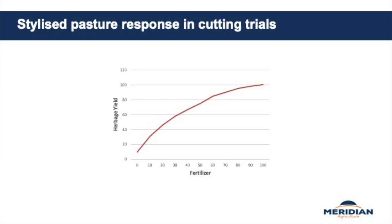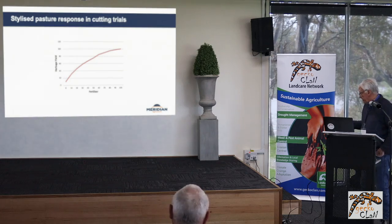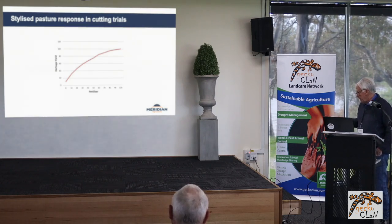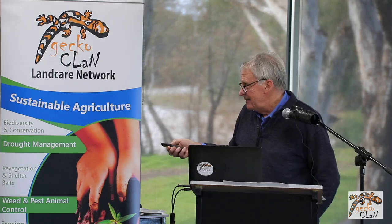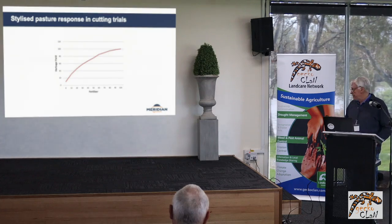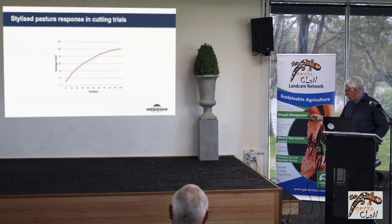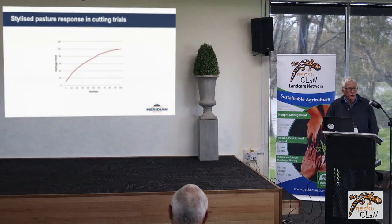Looking at the stylised response curve from cutting trials — if your maximum rate gives 100% of yield, putting on half the rate should give about 70% of the response. That's why when they did those sums in the 70s, the economics seemed marginal, locking people into low pH and low fertility levels. At a site at Longwood with 400 kg of super potash applied, by the time we got to about two years in we were up to about 13 DSE per hectare. But when we put half the rate on expecting 70% of the response, we only got a third. Unless you've got sufficient stock on to get recycling of nutrients, you're not getting the benefit of the fertiliser.